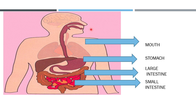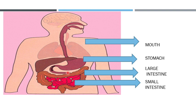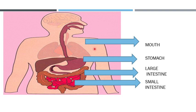Look, my dear students, this is a picture of our digestive system. In the mouth we take food, then food goes to the food pipe, then into the stomach, and after the stomach it divides into two parts. The unused parts of our food go into the large intestine and the useful part goes into the small intestine. You can see it in the picture.